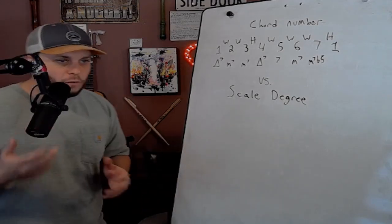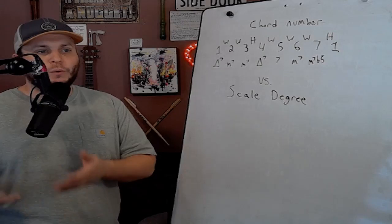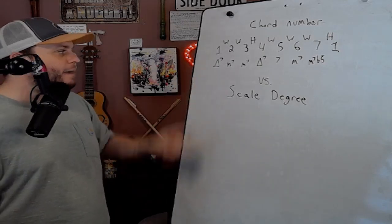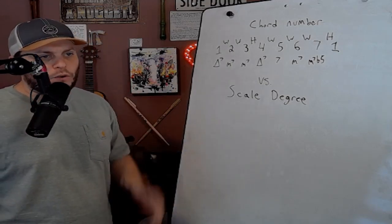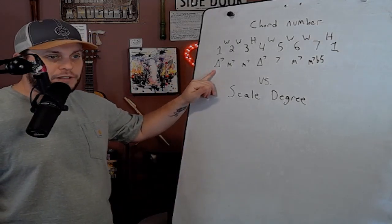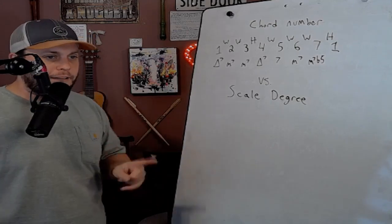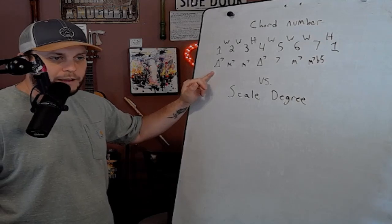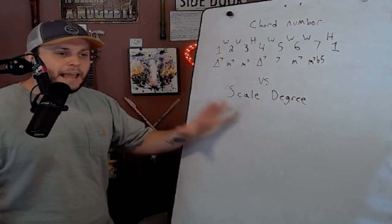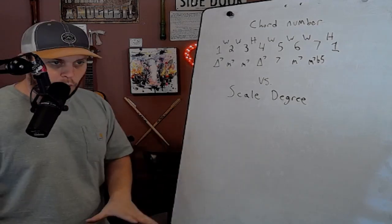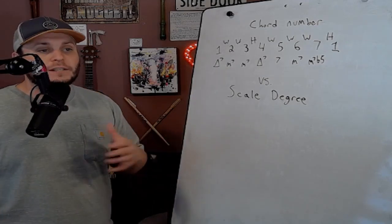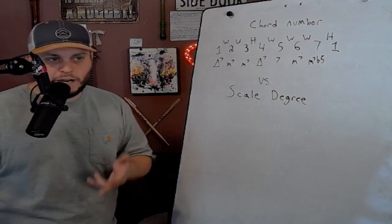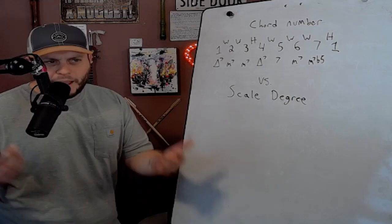And when you start to improvise and add extra notes, like you want to add a two on top of that, that doesn't mean add the two chord on top of that. If I say play the one chord in the key of B flat, that's B flat major seven, add a two onto that chord. That doesn't mean play a C minor seven and a B flat major seven at the same time. It means add the second scale degree of that chord. The note is a C. So you're going to play the one, the two, the three, the four and the seven.